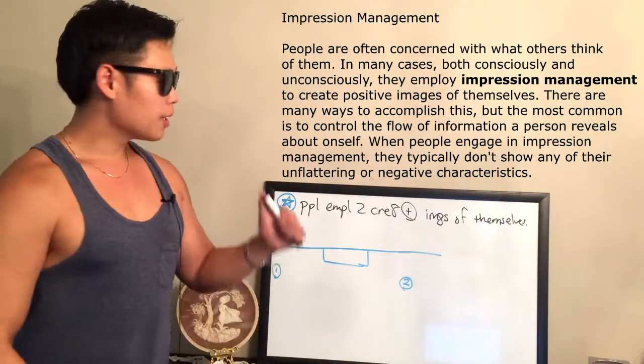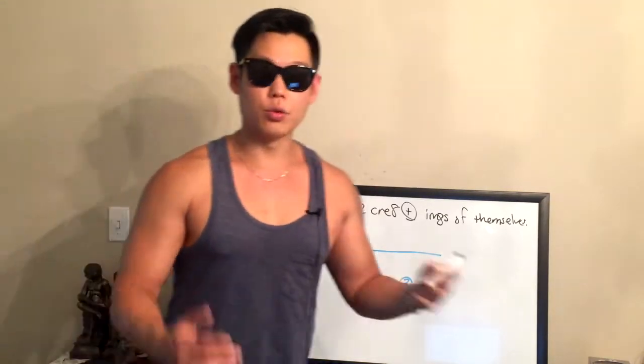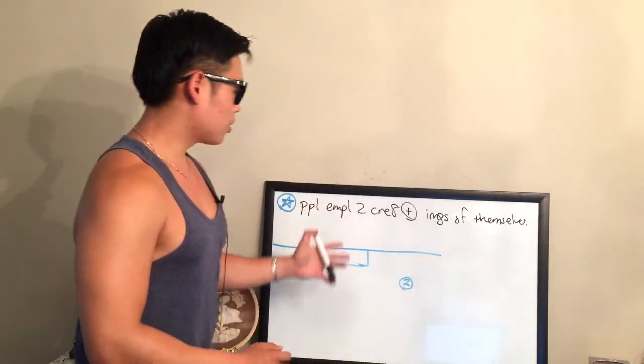Now that we've got the definition, we can ignore the rest of the reading passage. That's the beauty of the Task 3 and Task 4 reading passages — not every sentence is important. If you know exactly what you're looking for and you've found it, you're done with the reading passage and can ignore everything else.